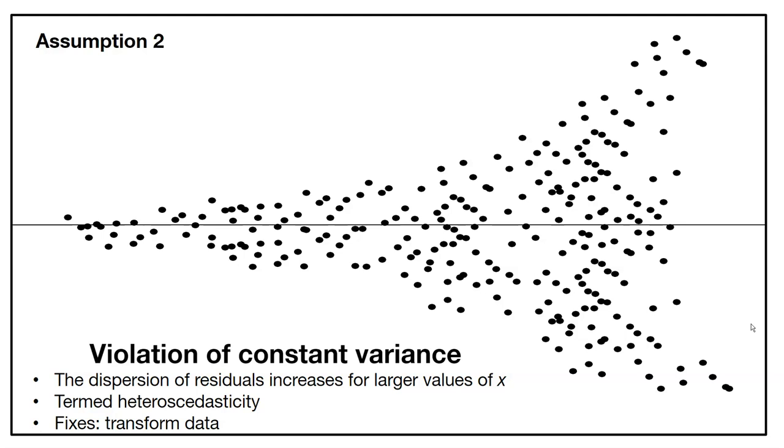Here's a popular violation we often see in statistics. This megaphone pattern in residual plots violates the assumption of constant variance—that is, the dispersion of residuals increases for larger values of x. There's a big word for this: heteroscedasticity. One way to remedy this is to transform your data so you can use the concepts and assumptions of regression and move forward with your analysis. Violation of constant variance is common when we work with data.